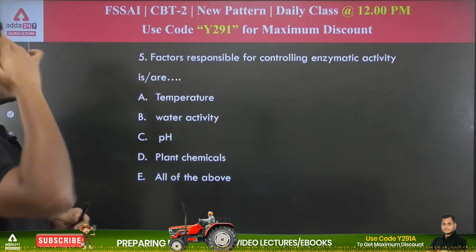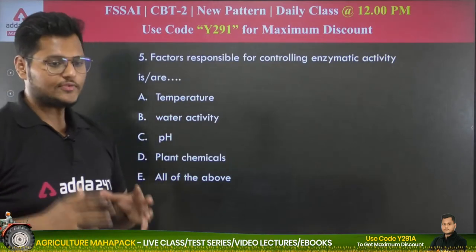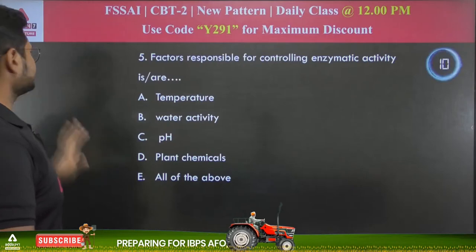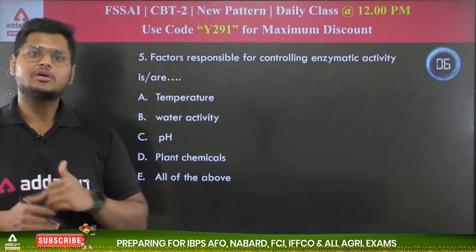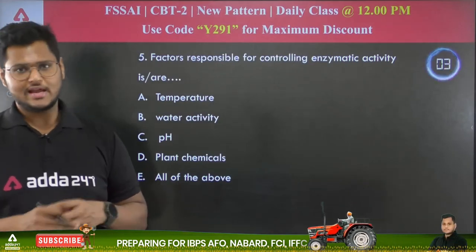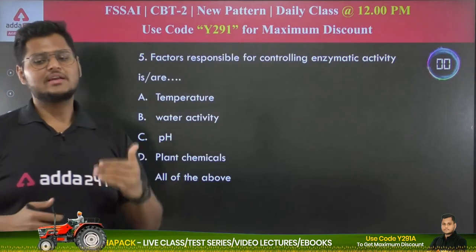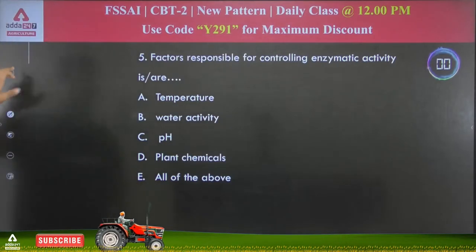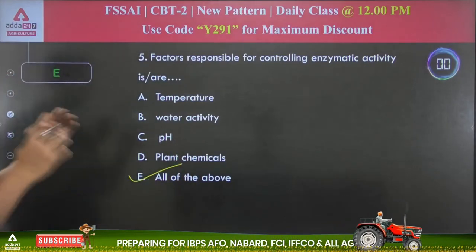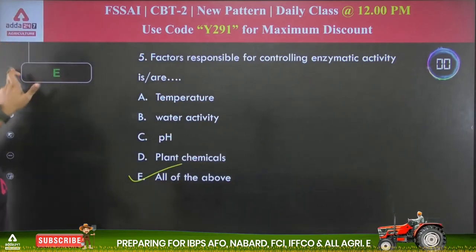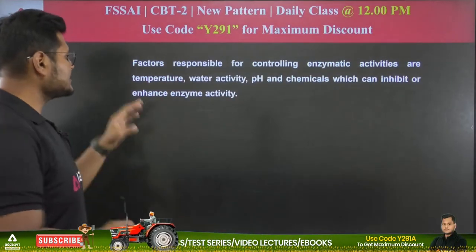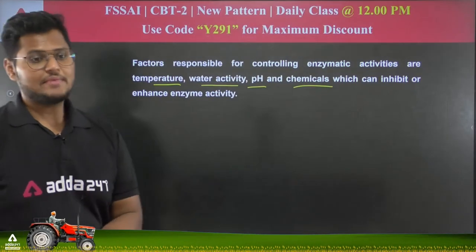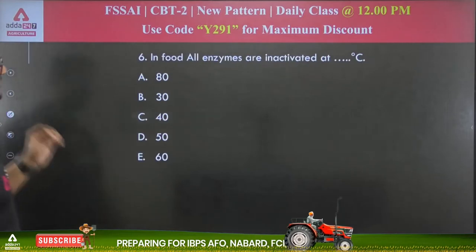Question 5: Factors responsible for controlling enzymatic activity are — temperature, water activity, pH, plant chemicals, or all of the above? The answer is all of the above. Temperature, water activity, pH, and plant chemicals that can inhibit or enhance enzyme activity are all factors responsible for controlling enzymatic activities. The question is about controlling — which means both accelerating and restricting enzymatic action.